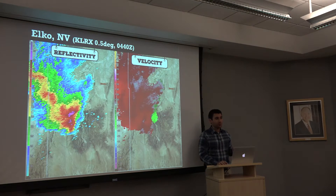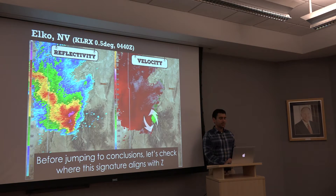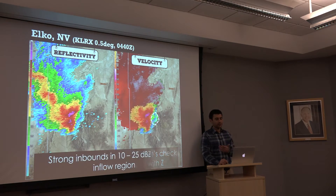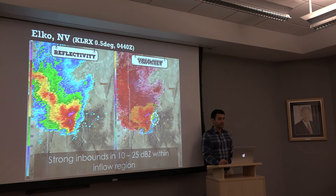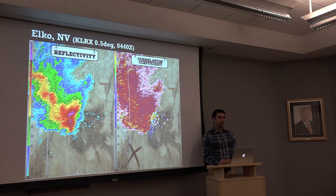Let's look at an example from Elko, Nevada — not a typical area for supercells, but we have a nice area of high reflectivity. We see inbounds with the radar to the northwest, outbounds next to inbounds — it looks like maybe we have rotation. But before jumping to conclusions, let's check how the signature aligns with reflectivity at 0.5 degrees. The area of strong inbounds sits in a region of about 10 to 25 dBZ within the inflow region. Looking at correlation coefficient, the values are pretty noisy and getting pretty low — below 0.7. Strike one on whether we can trust these data.